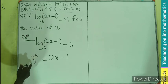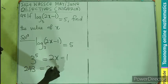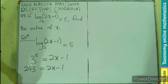This is going to be 3 multiplied by itself 5 times. That would give you 243 equals 2x minus 1. What do we do?